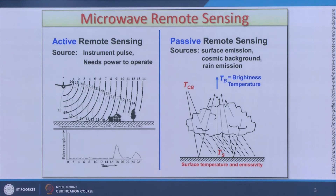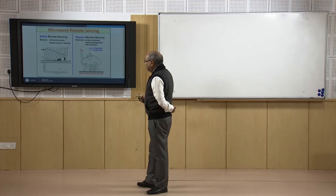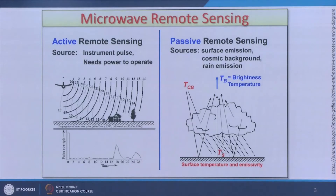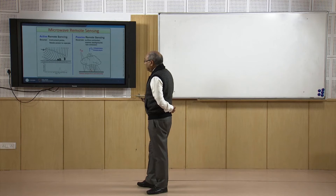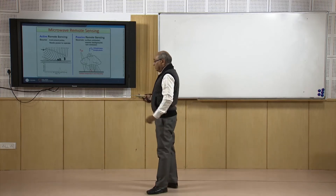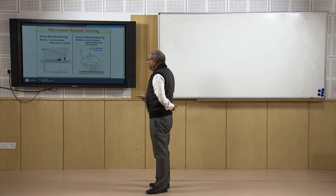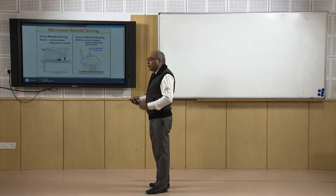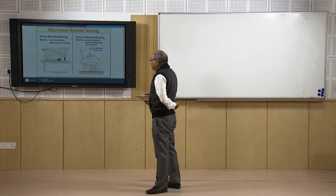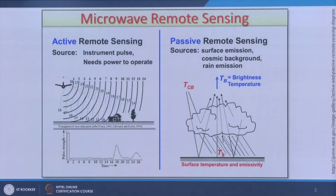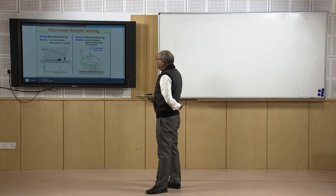In active radar remote sensing, the instrument sends a pulse — here an aircraft is shown but we can assume a satellite as well — and whatever is backscattered after interacting with different objects on the surface of the earth is returned and recorded. Based on this, distances are measured, which is basically a ranging technique. Through complex numbers, we ultimately create an image which we call a radar image. The travel time gives us the distance of different objects.